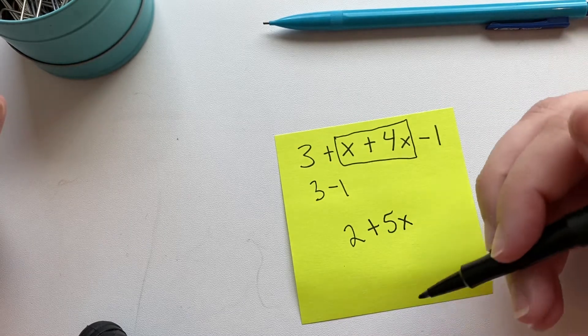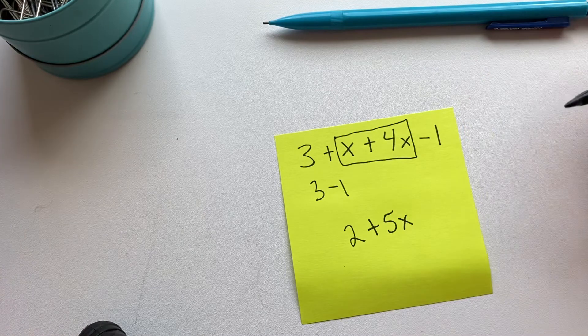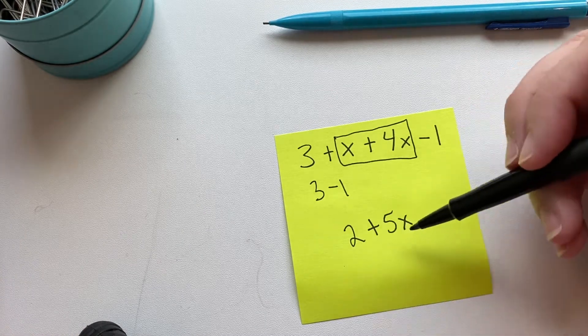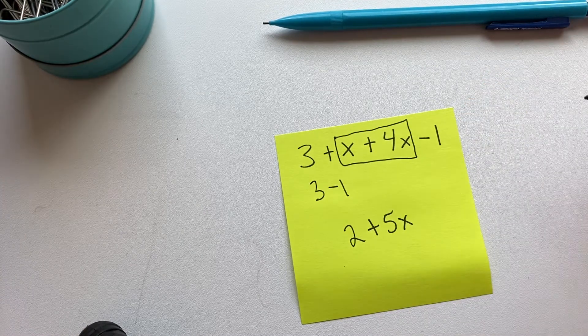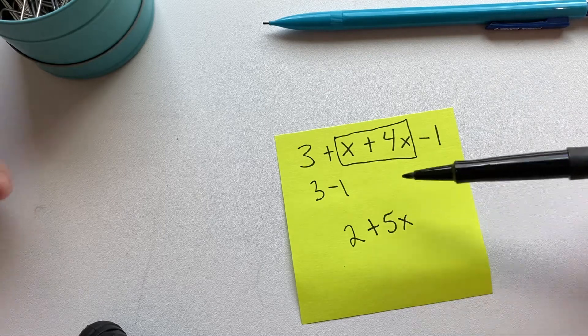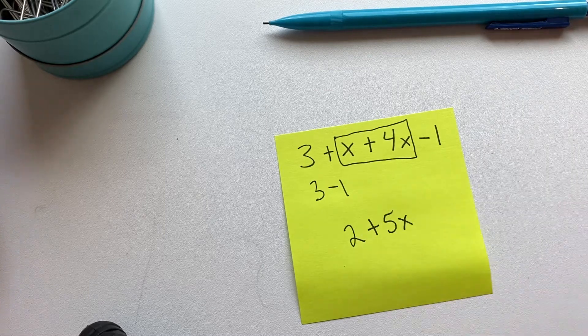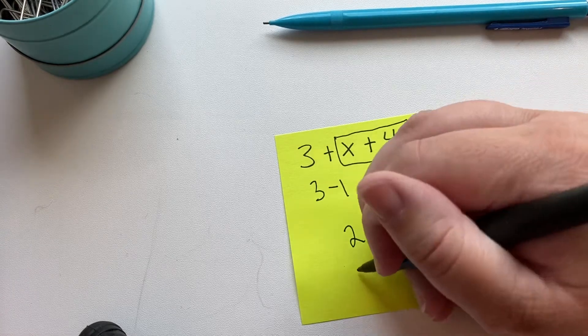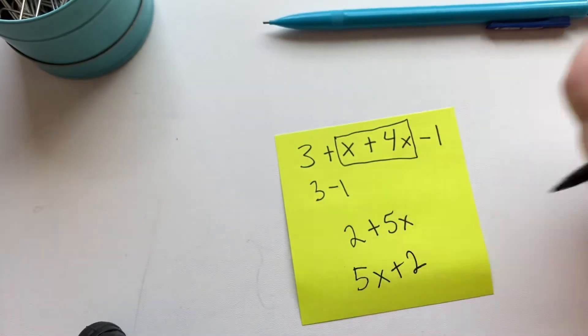I like to put the variable at the beginning, but it doesn't really matter because they can go in either order because there's not any multiplication going on between them. So we can just leave them in that order or it's also equal to 5x plus 2.